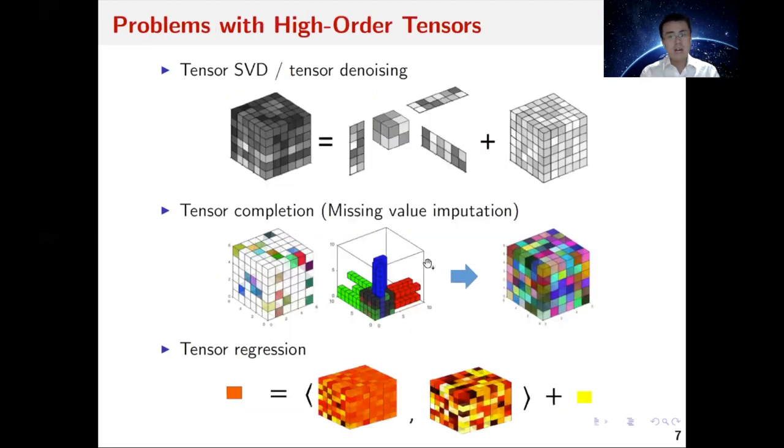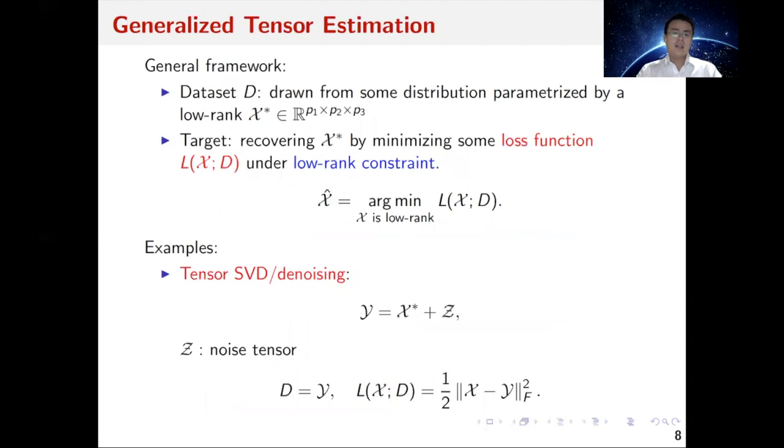In the literature there are a variety of tensor problems like tensor SVD, denoising, completion, and missing value imputation. These are unsupervised learning problems for tensors. There's also tensor regression, which is a supervised problem. Today we would like to provide a theoretical and computational guideline for all of them by introducing a general framework for low-rank tensor estimation.